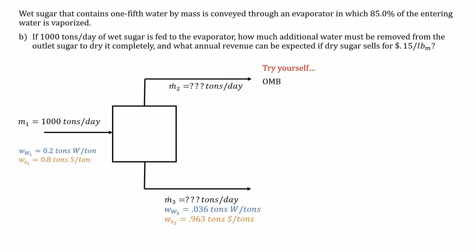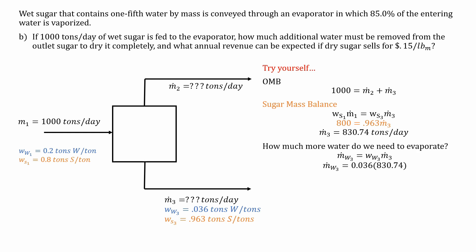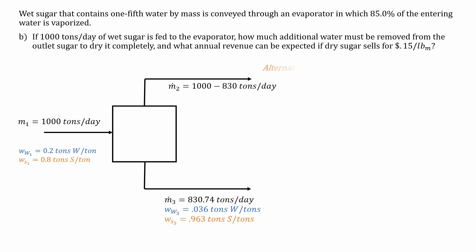Assuming you gave that a go, we have the overall mass balance, just like before, a thousand equals M2 plus M3. And we have the sugar mass balance, which is going to be the mass fractions and the masses. Replacing that for a calculation, we can solve for M3 to be about 830 tons per day. So how much more water do we need to evaporate? We need to calculate the mass flow rate of the water in the third stream. This gives us about 30 tons of water per day.